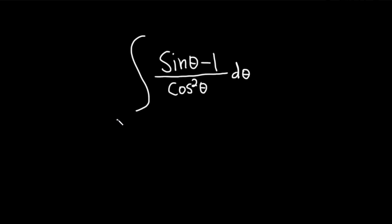So we can write this as the integral of sine of theta over cosine squared theta minus one over cosine squared theta d theta.